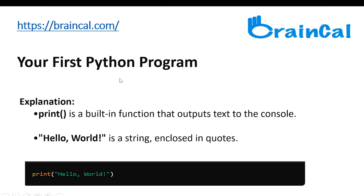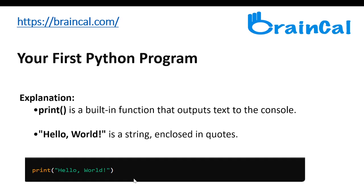Your first Python program. Print with brackets is a built-in function that outputs text to the console. Hello World is a string enclosed in quotes. So if we write this line of code as shown below, it will print onto the console: Hello World.